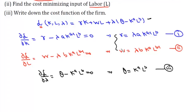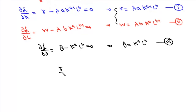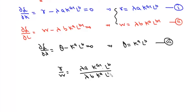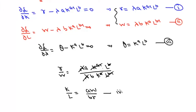Dividing the first equation by the second, r/w = (lambda * a * K^(a-1) * L^b) / (lambda * b * K^a * L^(b-1)). The lambda cancels, and simplifying the powers of K and L gives us K/L = aW/(br), which is our fourth equation.